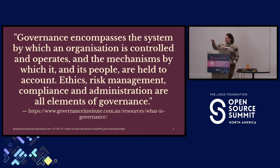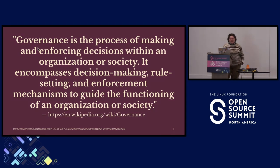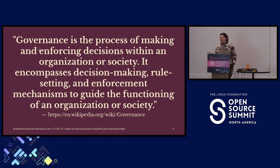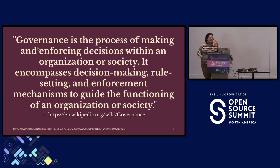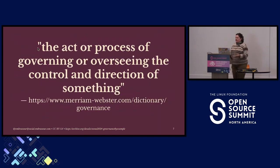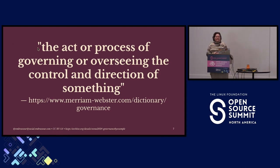Next is slightly less formal — we're going to bring it down a notch — and that's from Wikipedia, everybody's favorite online encyclopedia. They say: governance is the process of making and enforcing decisions within an organization or society. It encompasses decision-making, rule-setting, and enforcement mechanisms to guide the functioning of an organization or society. I think they need an editor; they use 'organization or society' twice in two sentences in a row. But aside from that, slightly less formal. Taking it down yet another notch, Merriam-Webster defines it as the act or process of governing or overseeing the control and direction of something.